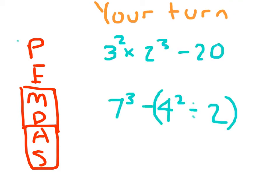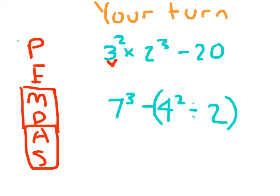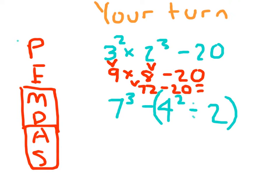It's your turn. Here are a few problems. Once they're written down, hit pause and solve. For that first one, 3 squared evaluates to 9, times 2 cubed. 2 to the third power is 2 times 2 times 2. 2 times 2 is 4, times 2 is 8. So we have 9 times 8, which is 72, minus 20, which equals 52.